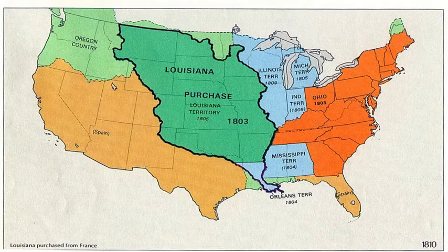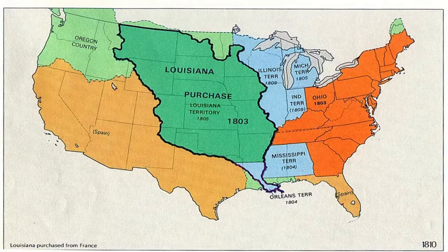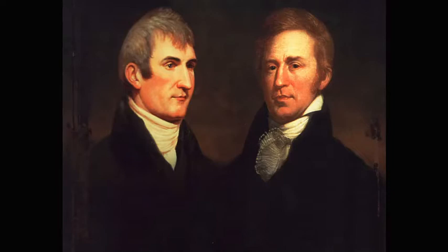The Louisiana Purchase led directly to a project that delighted and interested the President greatly — the famous Lewis and Clark Expedition, also known as the Journey of the Corps of Discovery. Meriwether Lewis and William Clark led the expedition, with Clark on the right and Lewis on the left. Lewis was a close friend and confidant of the President, and Clark was a close friend of Lewis. Toward the end of 1803, they set out from Pittsburgh, Pennsylvania, on a journey that would eventually take them all the way to Oregon and the Pacific Coast.